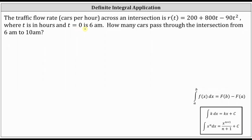The traffic flow rate in cars per hour across an intersection is r(t) = 200 + 800t - 90t², where t is in hours and t = 0 is 6 a.m. How many cars pass through the intersection from 6 a.m. to 10 a.m.?